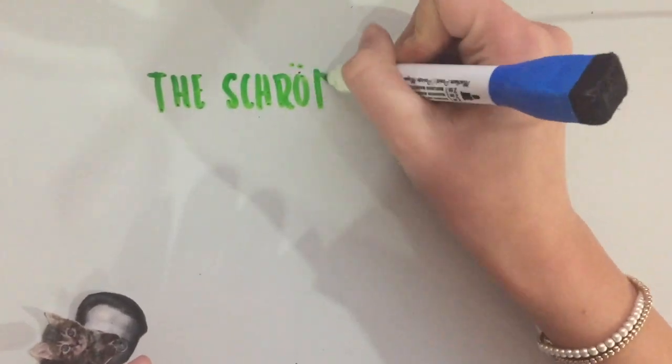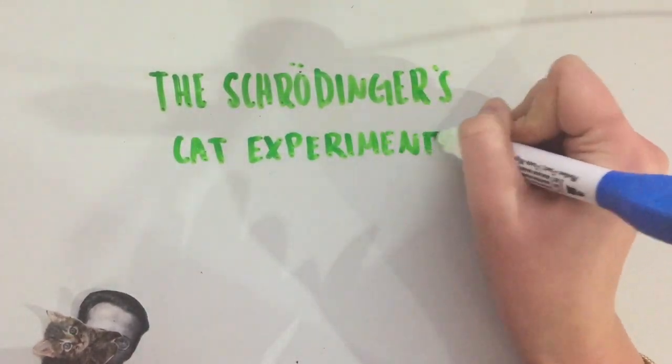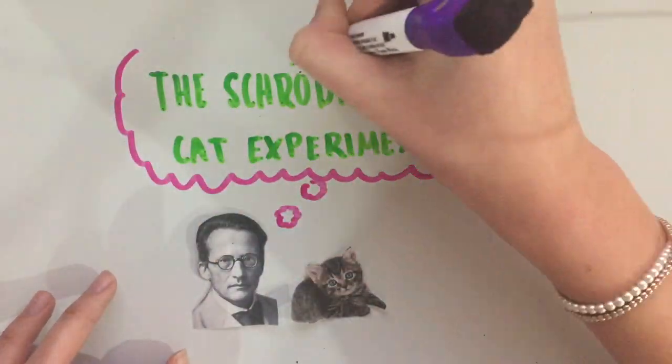All three of these basic principles surrounding the Copenhagen Interpretation are vital for your understanding of it. However, one of the best examples of the Copenhagen Interpretation in action comes from the Schrödinger's Cat Experiment.